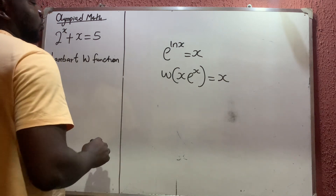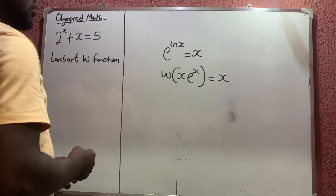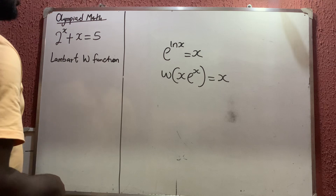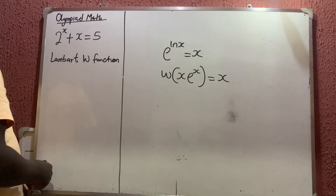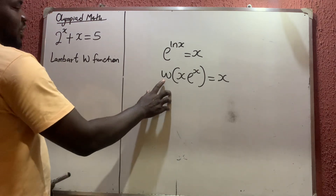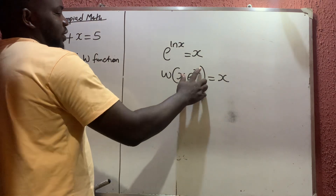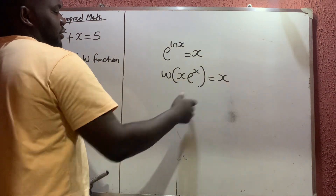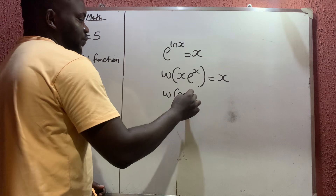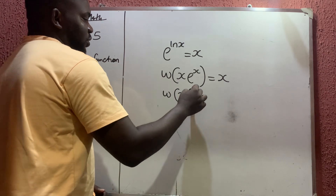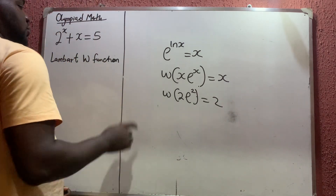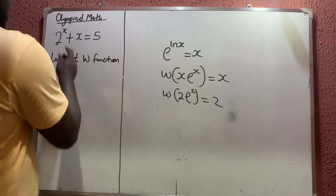The Lambert W function is equally called the product log function. So if you know that the Lambert W function of x times e raised to the power x is x, then you know that the Lambert W function of 2 times e raised to the power 2 is just 2.